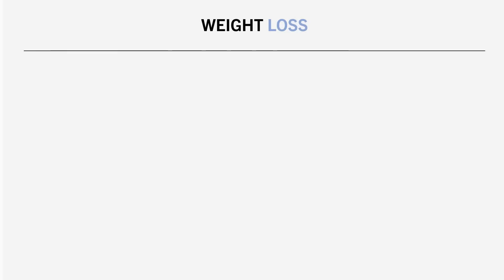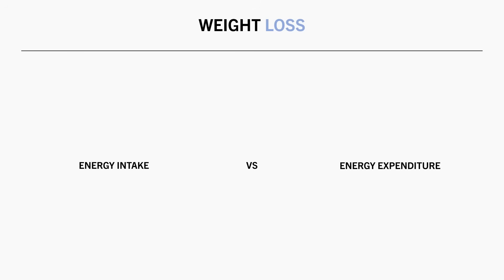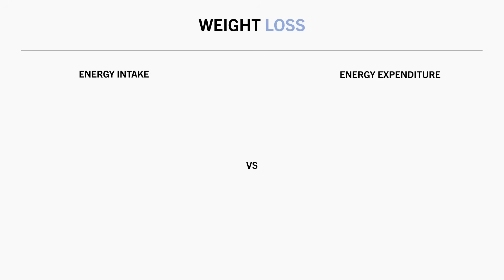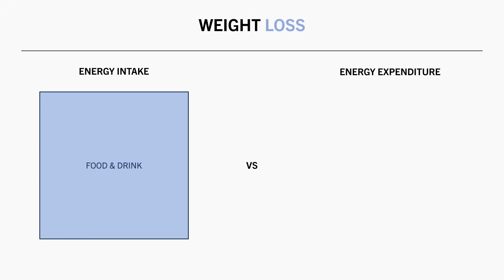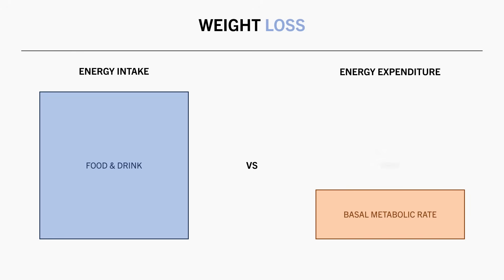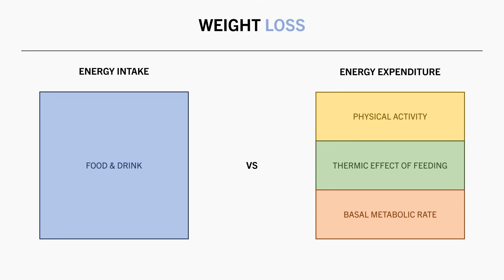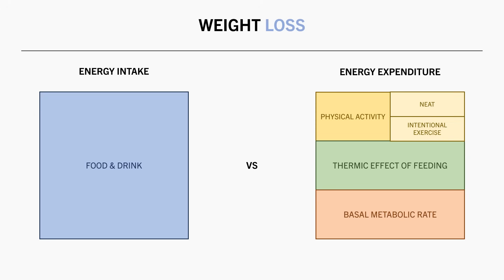So while weight loss is the most important consideration for fat loss, how do we lose weight? This ultimately comes down to energy balance — how many calories we consume versus how many we expend. Energy intake is the total calories consumed via food and drinks. Energy expenditure is a product of three primary components: basal metabolic rate, the thermic effect of food, and physical activity. Physical activity can also be sub-categorized into intentional exercise and non-intentional exercise, often referred to as NEAT. For weight loss to occur, we need to consume fewer calories than we expend on average over time.